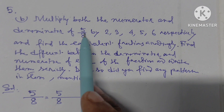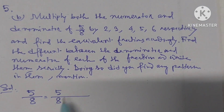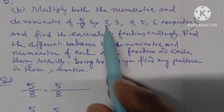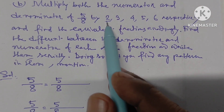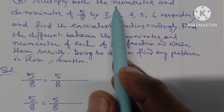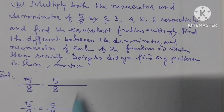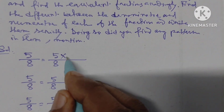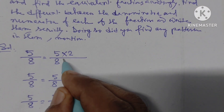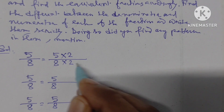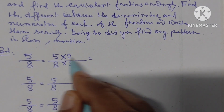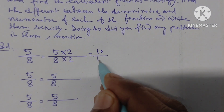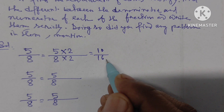The fraction given here is 5 by 8. We have to multiply first by 2 — both numerator and denominator. 2 times 5 is 10, 2 times 8 is 16. So the first equivalent fraction is 10 by 16.